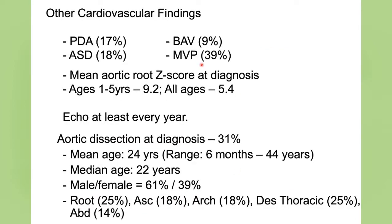Other cardiovascular findings include PDA, bicuspid aortic valve, and ASD. In a connective tissue disorder with overlap with Marfan syndrome, mitral valve prolapse is also fairly common, although generally less severe than in Marfan syndrome. Aortic dissection at diagnosis is relatively common, with a mean age of about 24 years, but importantly — unlike in Marfan syndrome — the age of dissection ranges down into early childhood, even infancy. There is some bias for earlier dissections in males, as in a number of other aortopathies, and the sites of dissection extend throughout the vascular tree.